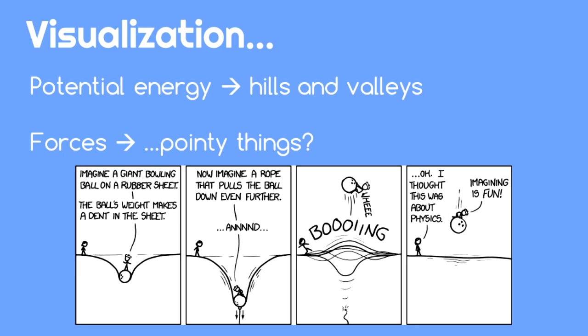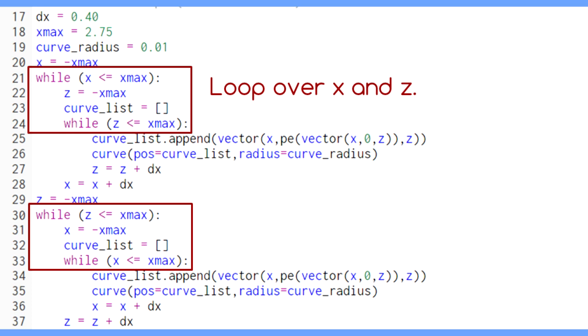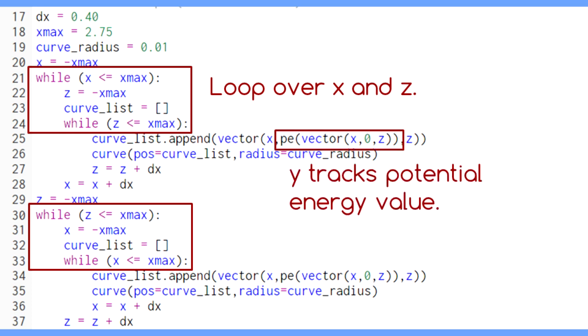We can create a similar rubber sheet visualization in our Euler-Cromer code. To make a rubber sheet visualization, we loop over a range of X and Z values, setting the height of our rubber sheet equal to the potential energy at that location.